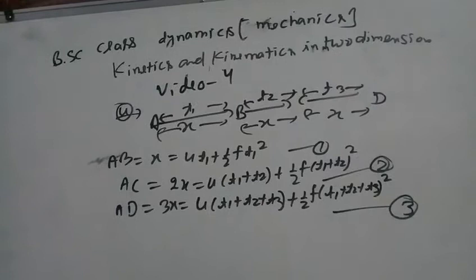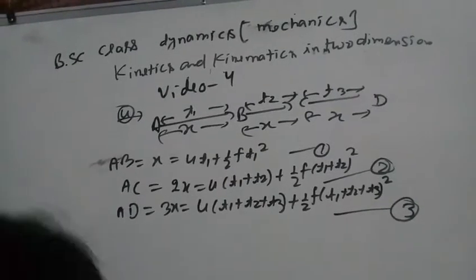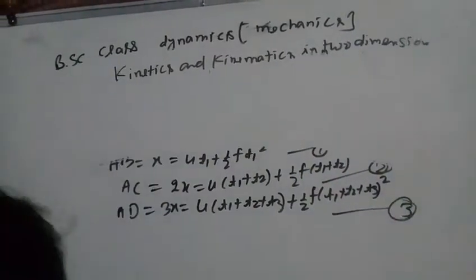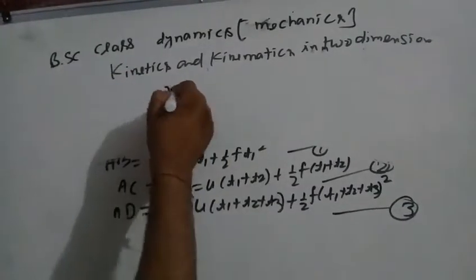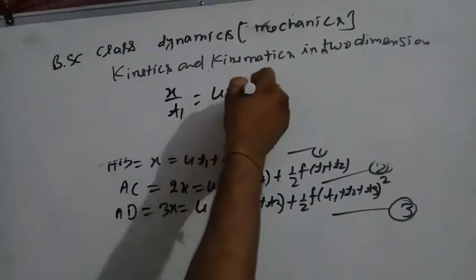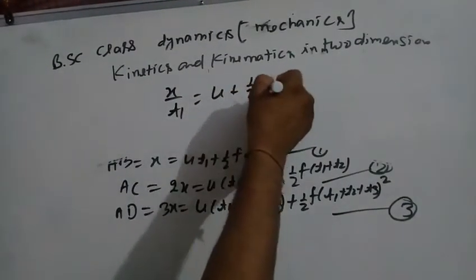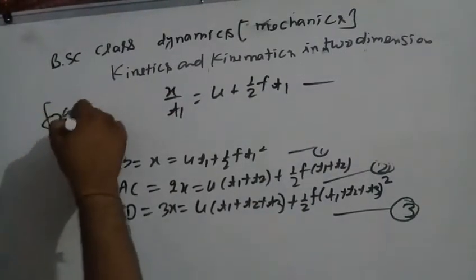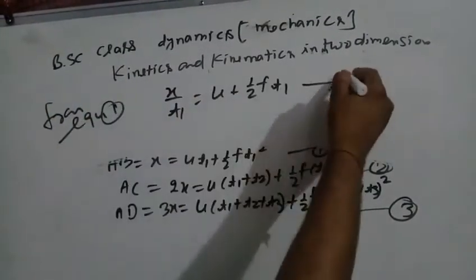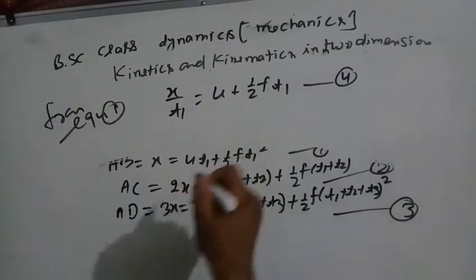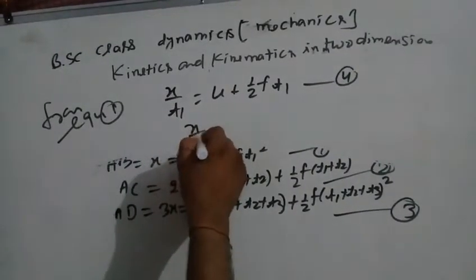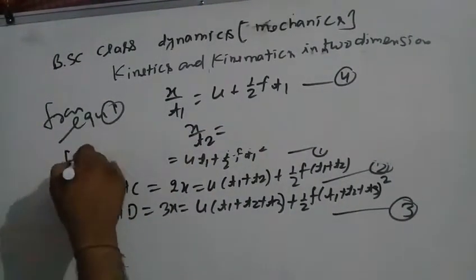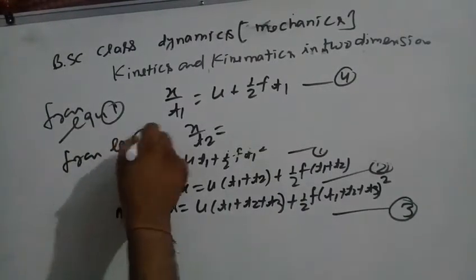Dividing equation 1 by t1: x/t1 = u + ½f·t1, this is equation number 4. Similarly x/t2 from equation 2 and x/t3 from equation 3 give further simplified forms.